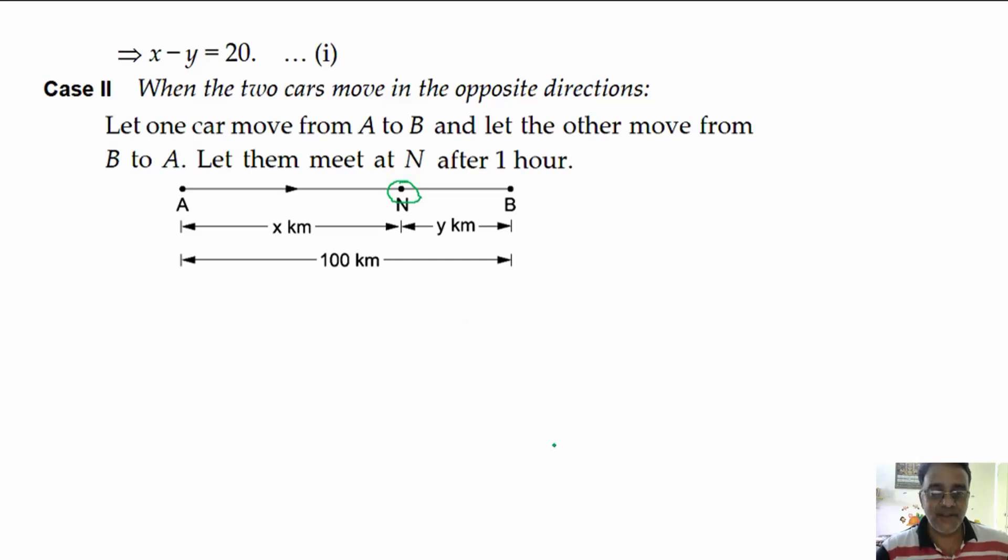Here speed is x and time is 1. So distance travelled by the car at A is x km. And the distance travelled by the car starting at B is y km.